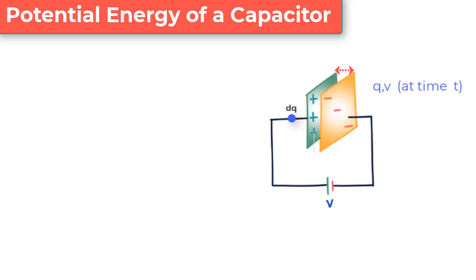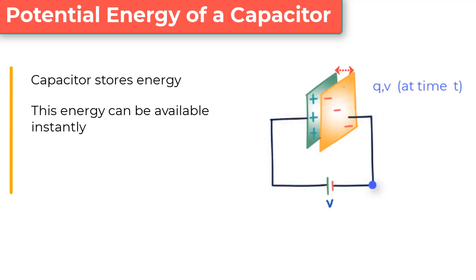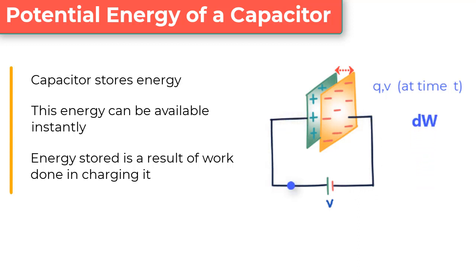By now we are quite clear that the usefulness of a capacitor comes from the fact that it stores energy that can be made available instantly. We also know that the potential energy stored in a capacitor is a result of the amount of work done to charge it. In other words, you need to put effort to separate charges and put them on different plates, and this effort is work done that translates to potential energy of the capacitor.